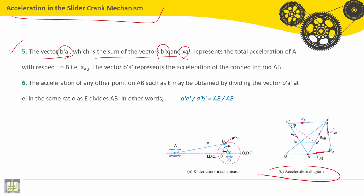The vector B-A-dash, which is the sum of the vectors B-X (this is B-X) and X-A-dash, equals A-B-dash. It represents the total acceleration of A with respect to B, which is A-AB.